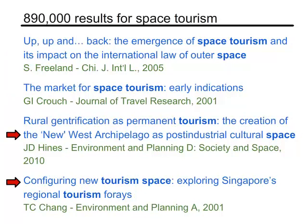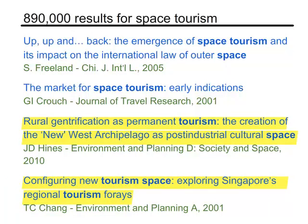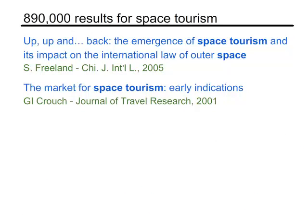They have the words 'tourism' and 'space' in them, but not necessarily together as 'space tourism.' For example, this result is about tourism spaces in Singapore — definitely not about space tourism. In most databases, you can eliminate irrelevant results like these.